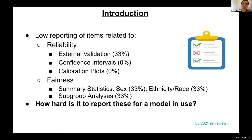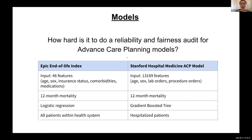There was also low reporting of demographic information — missing table ones with information on sex, diversity, and race — and missing subgroup analyses for different groups. The question we wanted to answer is: how hard is it to actually audit a model that is currently being used? We considered two models used to support advanced care planning, specifically to flag patients at high risk of dying within the next year.